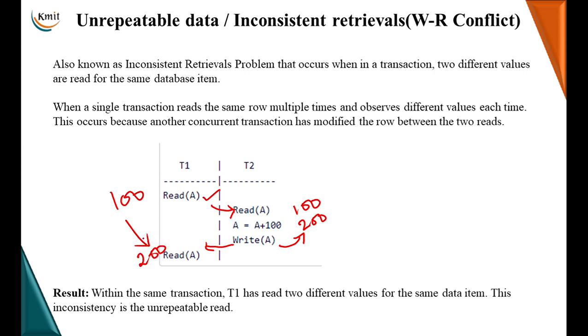Now, if you observe here, in the same transaction, once the value of A is 100, another time the value of A is 200. So, this is what is called as inconsistent retrieval problem that occurs when in a transaction two different values are read for the same database item. Remember, when a single transaction reads the same row multiple times and observes the different values each time. This is because another concurrent transaction has modified the row between the two rows.